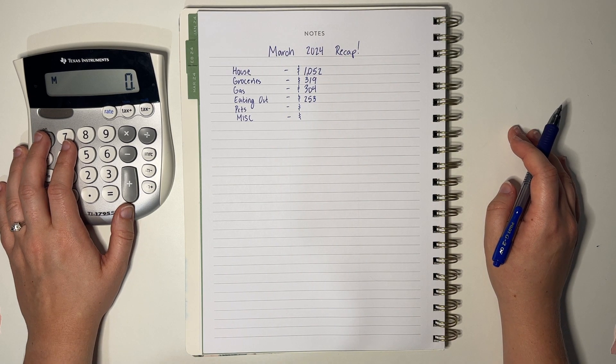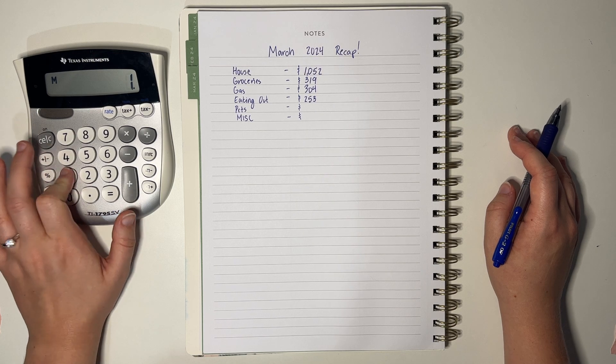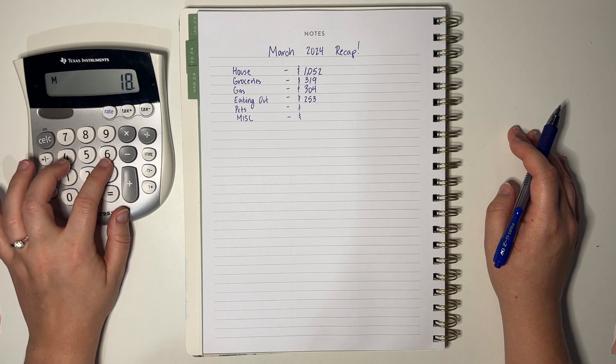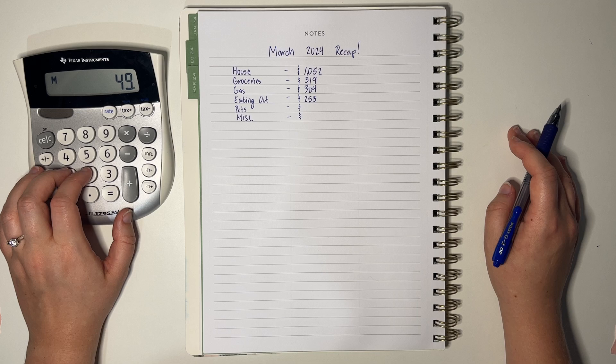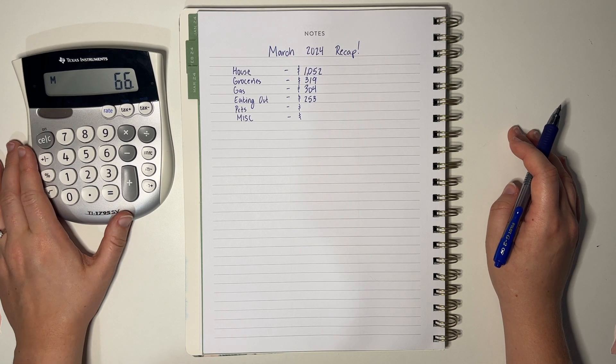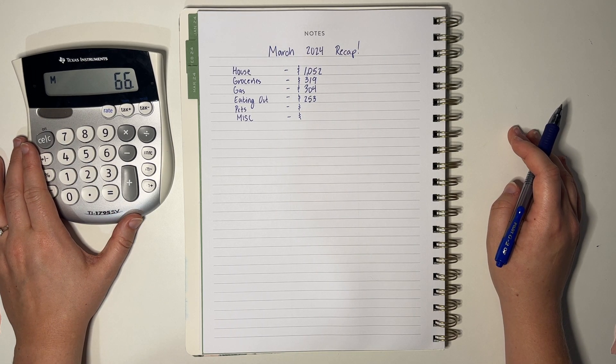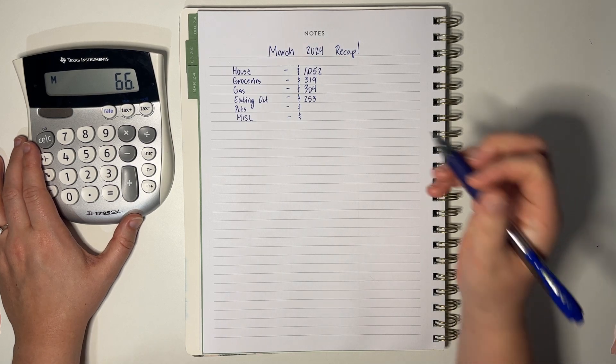Looks like the pets got flea medicine, new lights. One of the lizard lights went out. And I think that's food. So from pets, we spent $66.